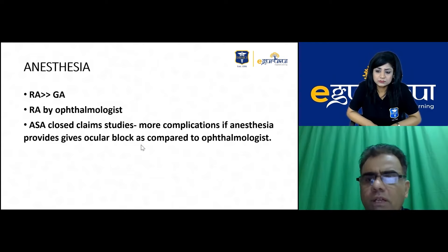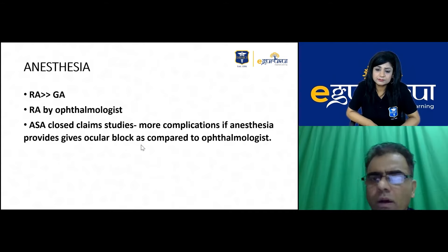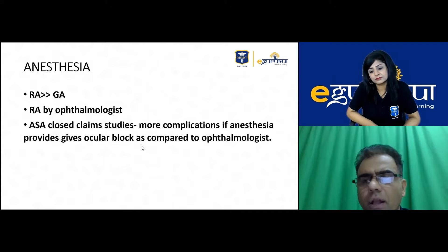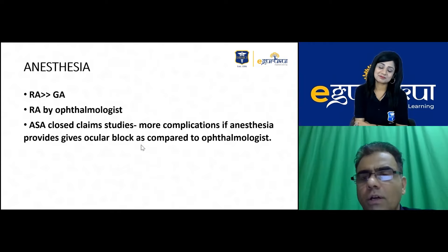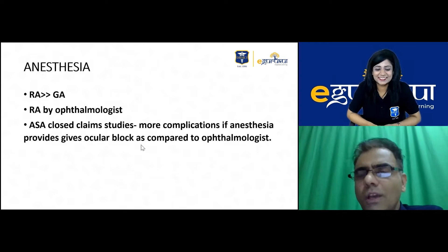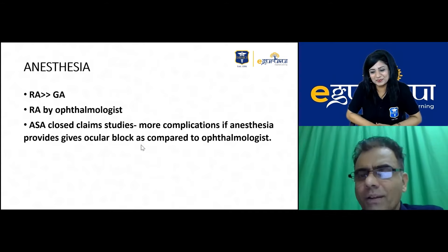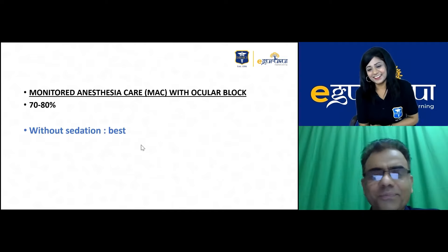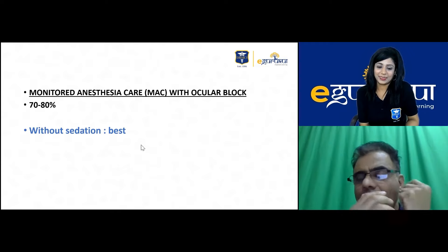The majority of eye surgeries are possible under regional anesthesia, and regional blocks are given by ophthalmologists themselves. An American Society of Anesthesiologists study found that complication rates were significantly higher when blocks were given by anesthetists compared to ophthalmologists. Anesthetists stay outside and only go in if called — their presence can even increase the complication rate.